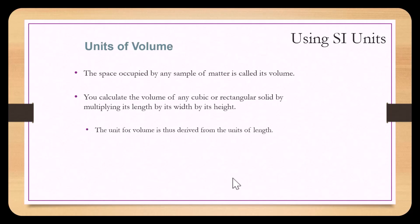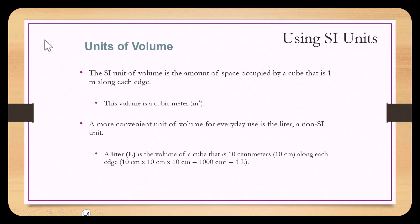The space occupied by a sample of matter is called its volume. You calculate the volume of any cubic or rectangular solid by multiplying length by width by height. The SI unit of volume is the amount of space occupied by a cube that is one meter along each side — a cubic meter. A more convenient unit for everyday use is the liter. A liter is the volume of a cube that is ten centimeters along each edge: 10 cm × 10 cm × 10 cm equals 1,000 cubic centimeters, or one liter.